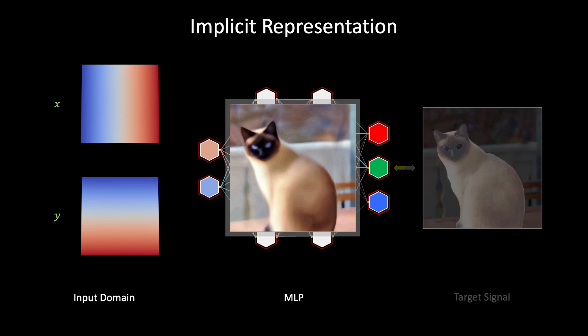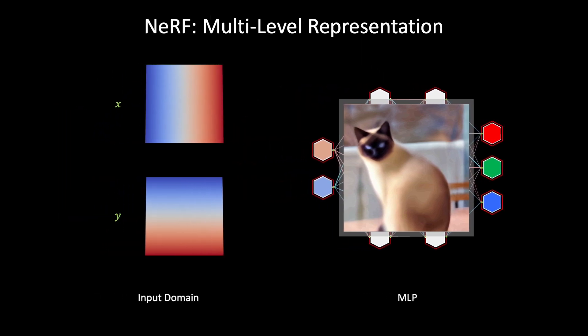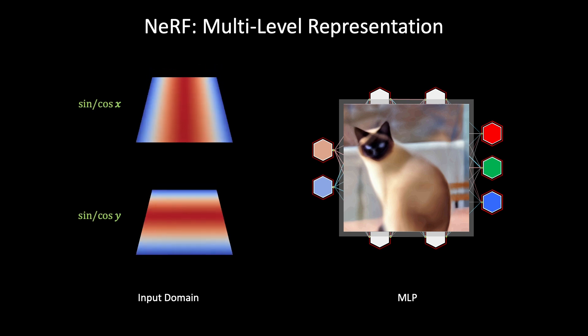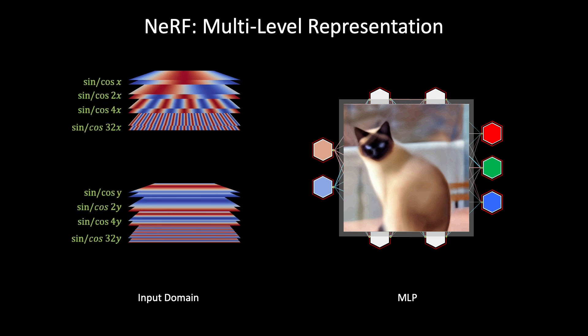To address this challenge, the subsequent work NeRF introduces a novel approach for representing a radiance field. NeRF represents the field using an MLP and Fourier space, where the spatial coordinates are encoded with multilevel sinusoidal functions.